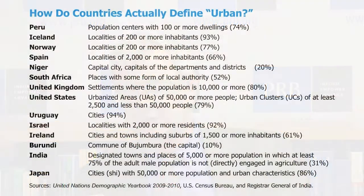The next chart shows some widely varying definitions of urban — this is what countries themselves report to the United Nations. The size of places considered urban varies considerably: in both Norway and Iceland, places of just 200 population qualify. The highest threshold I've ever seen is Japan, which has cities called 'Shi' with 50,000 or more. Others don't even have a population size — Uruguay, for example, just says 'cities' without further specification. This list really surprises people when they see it.